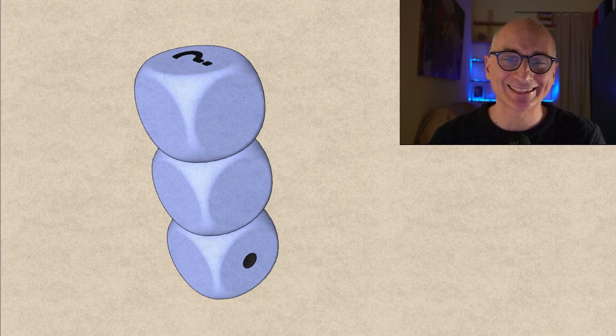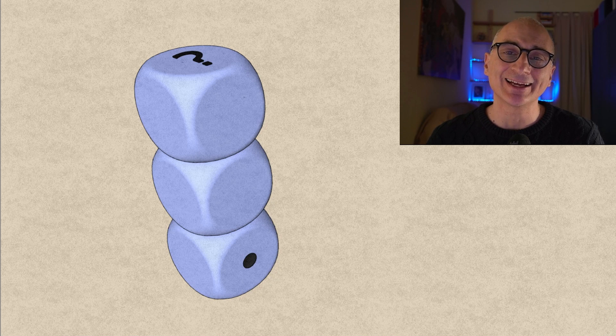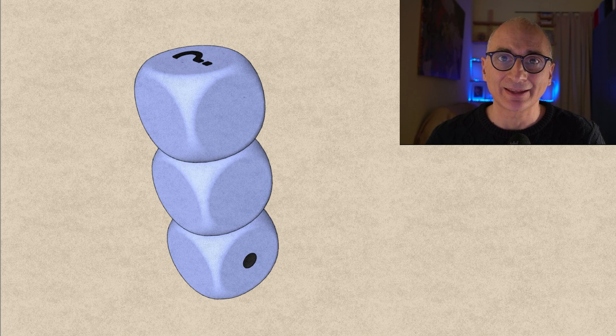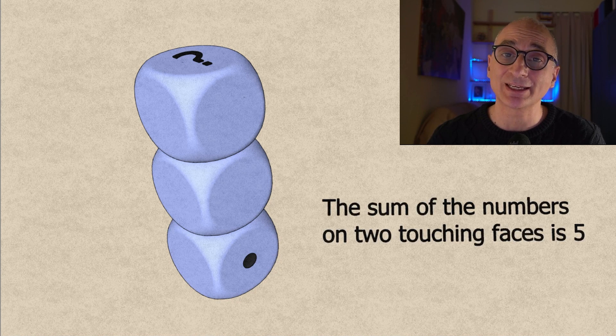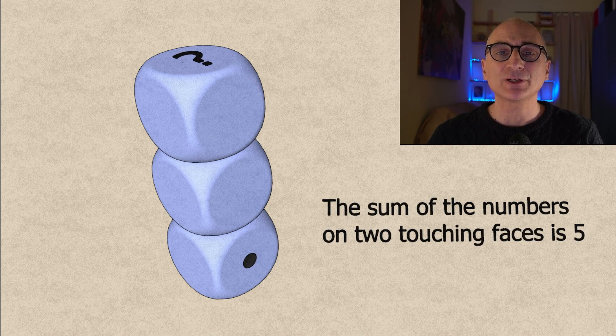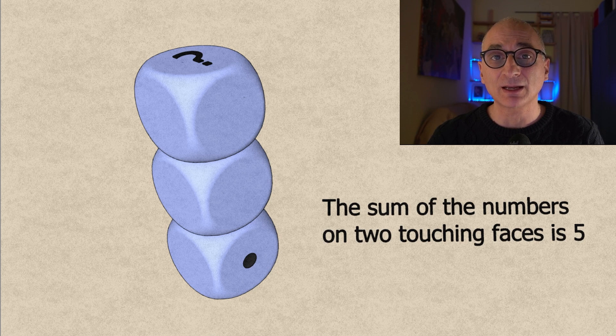So here's a surprising puzzle about dice. You have three standard dice and they're stacked like this. And you know that the sum of the numbers on two touching faces is five. So the question for you is what's the number on the top face of the stack?